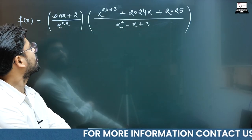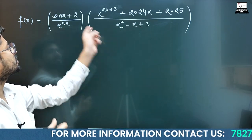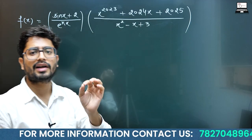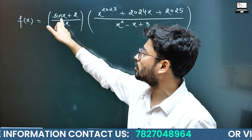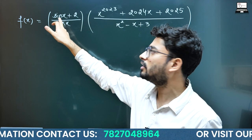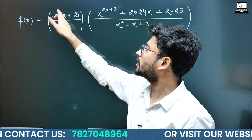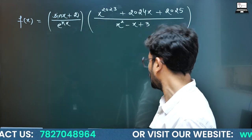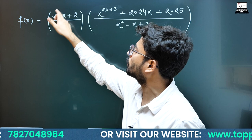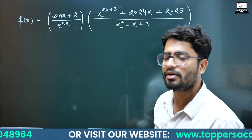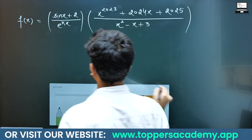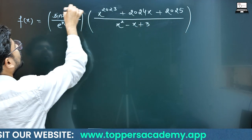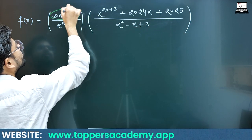Now you can say sin x + 2: whatever be the value of x, sin x is from minus 1 to 1, and if you add 2, that quantity is always a positive quantity.